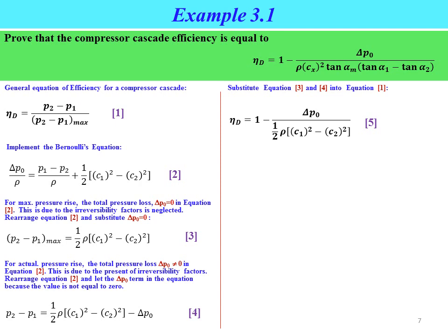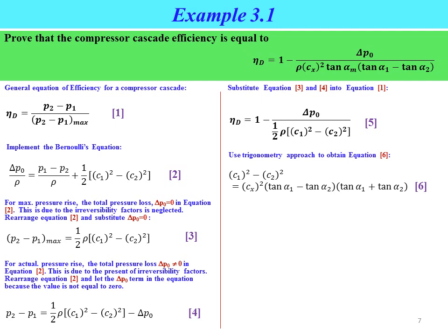Substituting Equations 3 and 4 into Equation 1, we obtain Equation 5: mu_d = one minus delta p0 divided by half rho times (c1 squared minus c2 squared). So mu_d is a function of delta p0, density, and inlet and outlet flow velocities. To introduce trigonometric terms, we use the identity that c1 squared minus c2 squared equals cx squared times (tangent alpha_1 minus tangent alpha_2) times (tangent alpha_1 plus tangent alpha_2), shown as Equation 6.